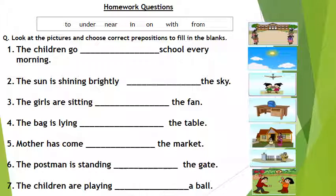Number 6 The postman is standing dash the gate. Number 7 The children are playing dash a ball. So, this is all for today. Now, you are going to do your homework very neatly. And your all answers should be correct. I'll check.